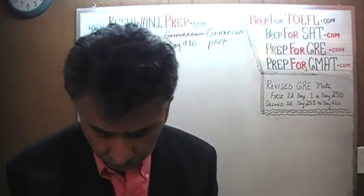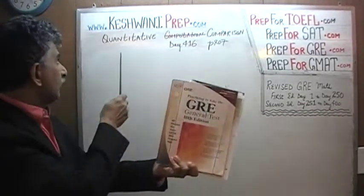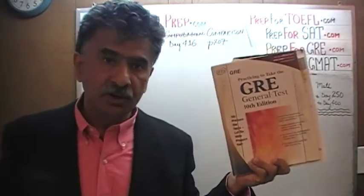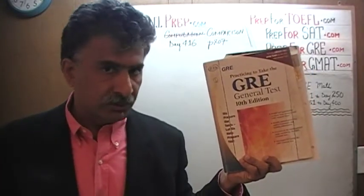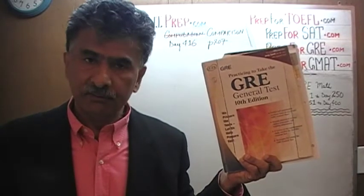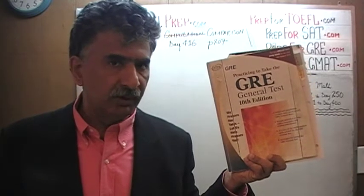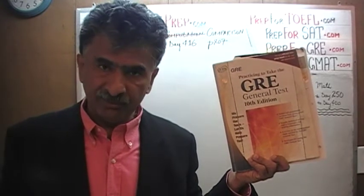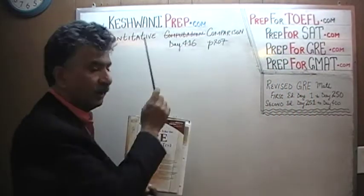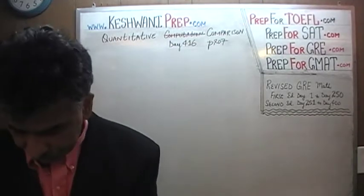Right now we are in the process of solving quantitative comparison questions out of this book, the General GRE, the 10th edition. Because the first and second editions of the revised GRE simply do not contain enough quantitative comparison questions, and those are still a very big chunk of the exam. We started solving problems from here on day number 401. Right now we are on page number 207. Let's turn to it.